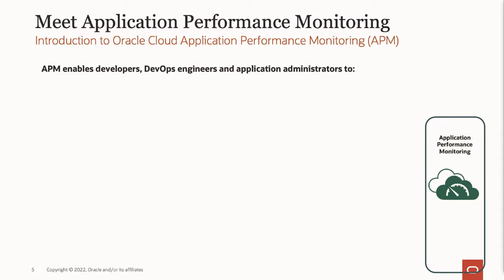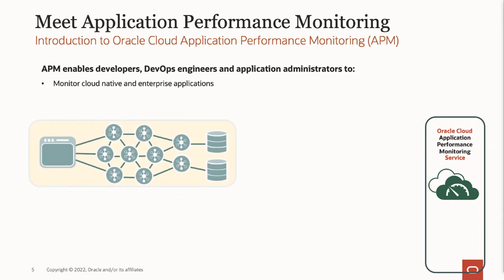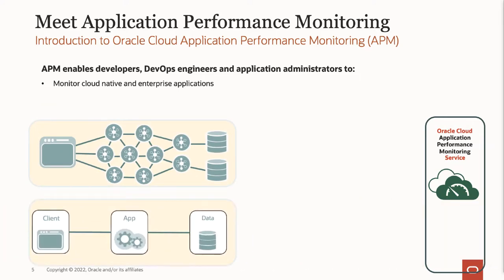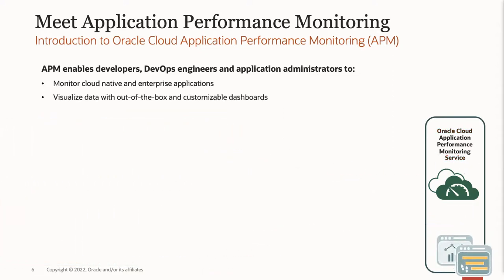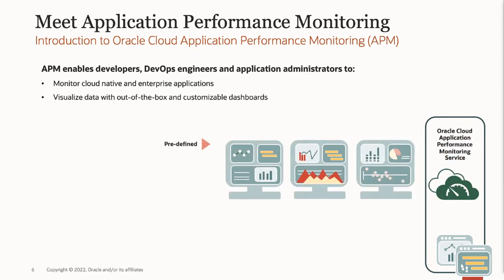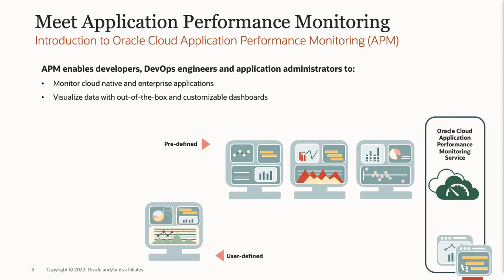Application Performance Monitoring, or APM in short, is a new service in Oracle Cloud Infrastructure. It helps you monitor cloud-native and enterprise applications, whether there is a microservices application running on Kubernetes or a packaged application with traditional multi-tier architecture. APM tracks every step of every transaction, allowing you to envision the complete set of trace data with a rich user interface on Oracle Cloud Console. You can visualize the data with out-of-the-box dashboards predefined for common use cases, or create your own custom dashboards that meet your specific requirements. Captured data is stored in an internal database for real-time and historical data analysis.